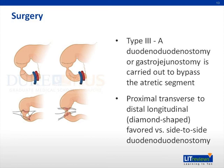Gastroduodenal function usually returns within 5 to 7 days, at which time enteral feeding can be initiated with small boluses and the volume progressively advanced as tolerated. One of the most problematic issues following repair of duodenal atresia is delayed transit, usually associated with a persistently dilated and dyskinetic proximal duodenum. Even with the preferred diamond anastomosis, a persistent mega duodenum with symptomatic partial obstruction and stasis can occur. This complication may be managed either by tapering duodenoplasty or bilateral seromuscular resection. Survival rates of 95% are reported, with mortality in most cases due to associated anomalies. Approximately 12% of patients require revision or other intraabdominal surgery over a 30-year follow-up period.